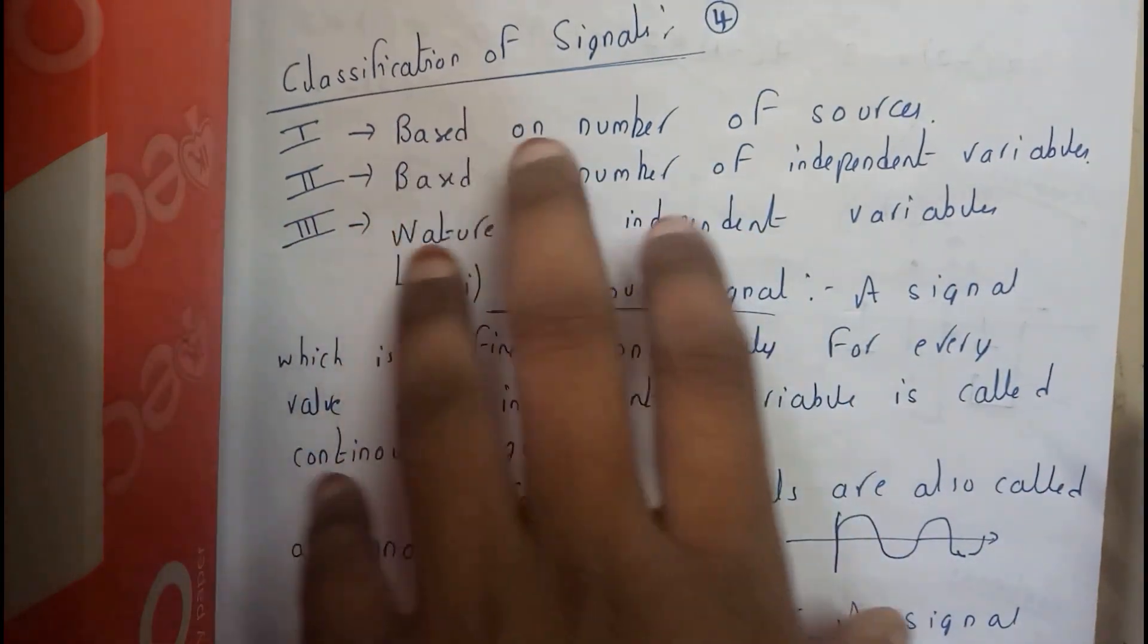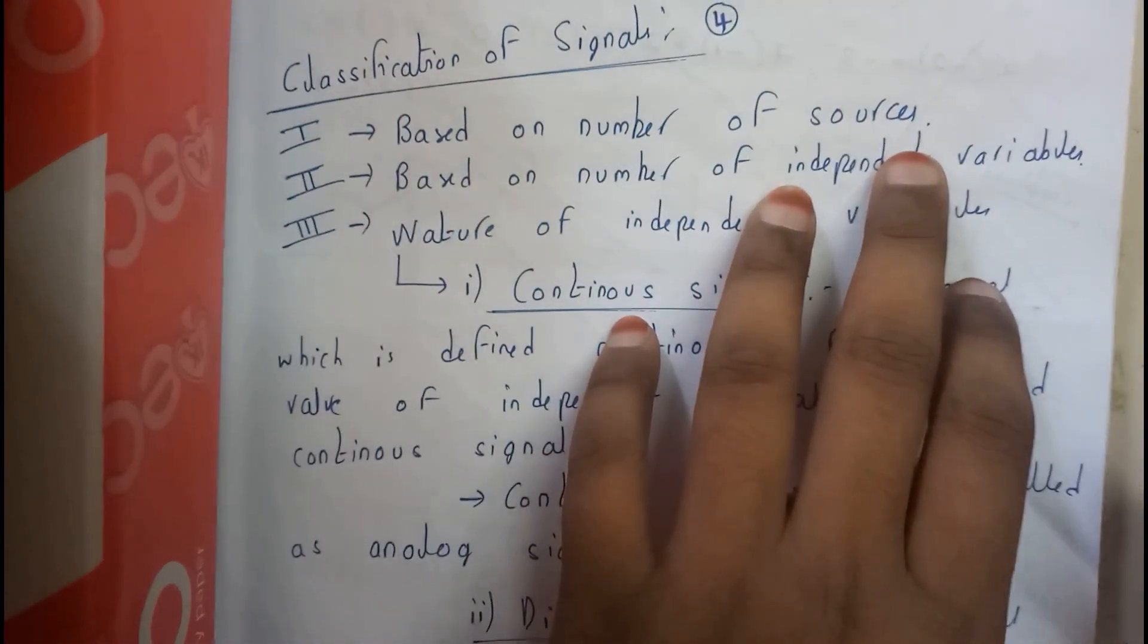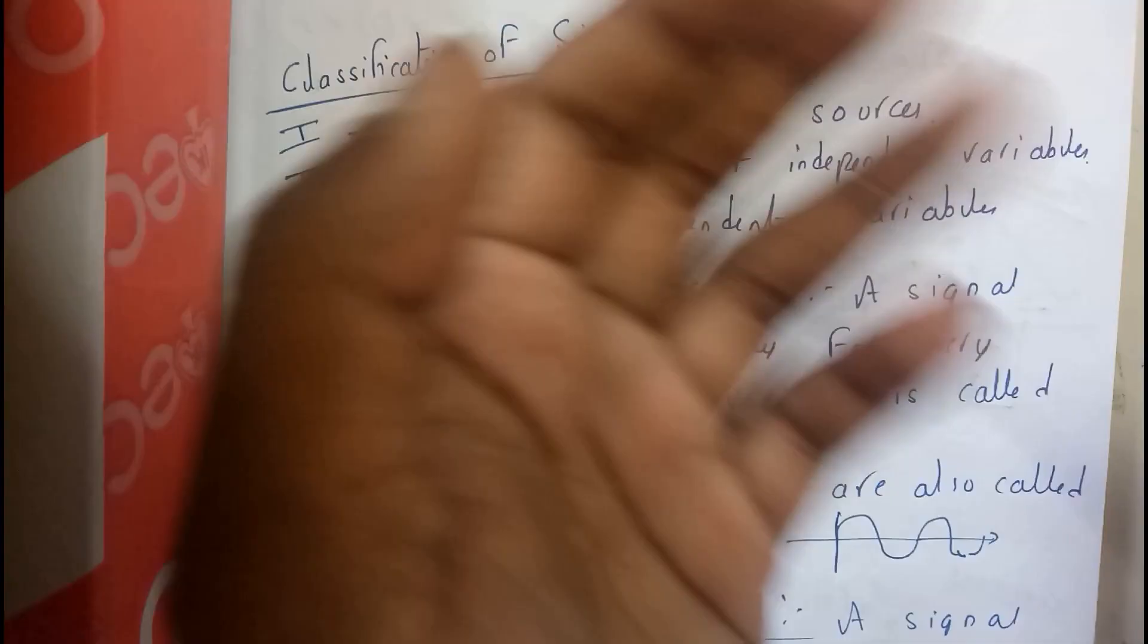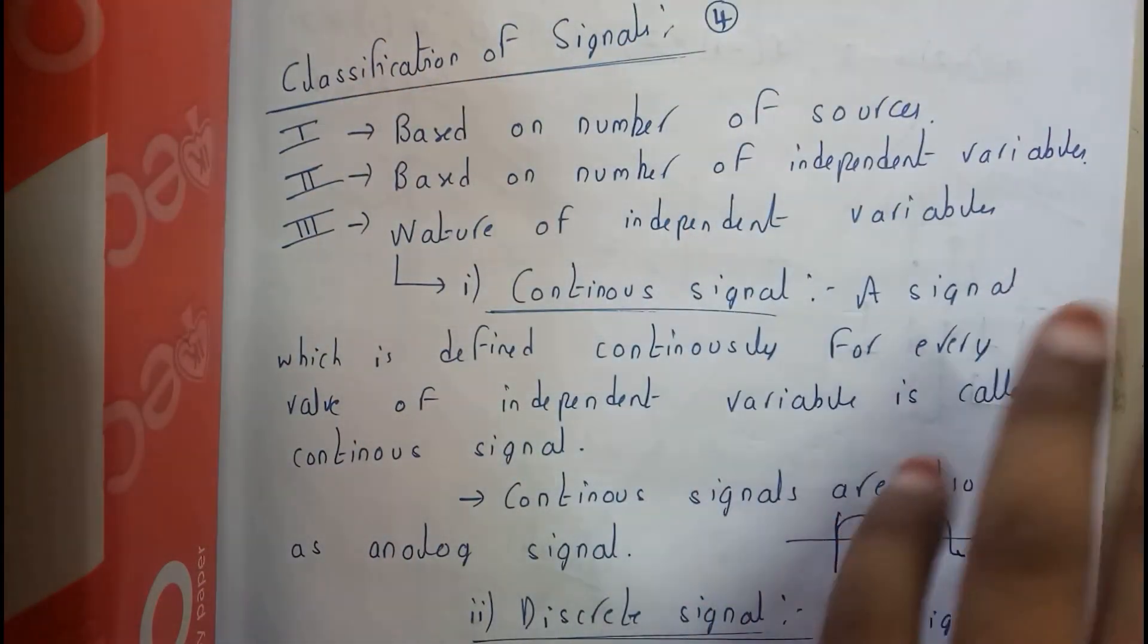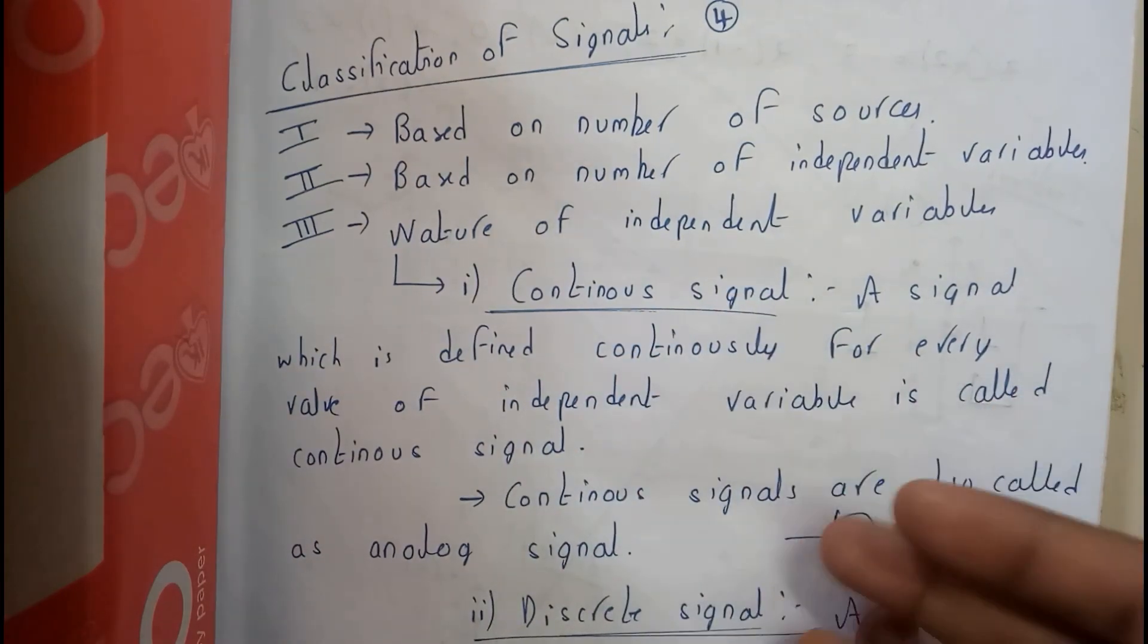The basic three classifications are based on the number of sources. If there are any number of sources, it's going to be a stronger signal in between those many sources. If it is a single source, it's going to be a weak signal.